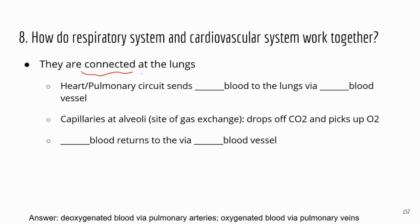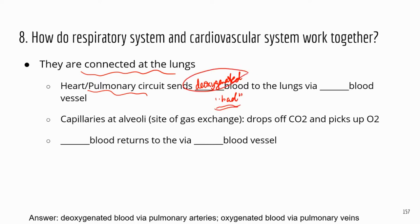These two systems — the respiratory and cardiovascular — are connected at the lungs. The heart, specifically the pulmonary circuit, is going to send de-oxygenated blood to the lungs via the pulmonary arteries. The arteries always take blood away from the heart, so this is where the heart sends de-oxygenated blood to the lungs. The blood goes to the lungs through the pulmonary arteries, which branch off and form smaller arteries, and eventually capillaries.